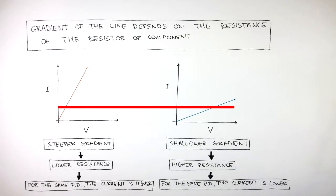Whereas the graph on the right, to achieve the same current, the potential difference is higher. More energy has been required to force the electrons through the metal wire. Therefore, the resistance is higher in the graph on the right, and the resistance is lower in the graph on the left.